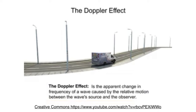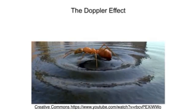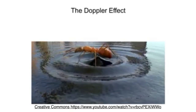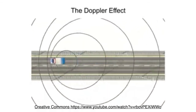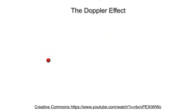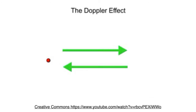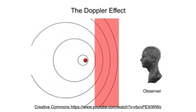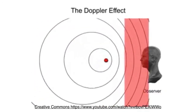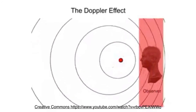The Doppler effect can be observed with any wave-producing source — waves of water created by a bobbing bug moving across the surface of a pond, or sound waves of a siren from an approaching ambulance. The Doppler phenomenon occurs when the object emitting waves moves toward or away from a fixed point or an observer. In front of the object, the waves are compressed; behind it, the waves are spread out.